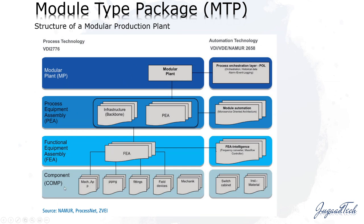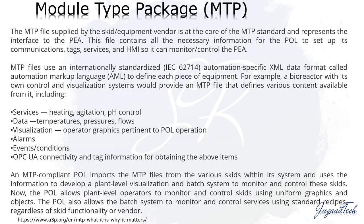The structure of a modular production plant: components are combined into a Functional Equipment Assembly, which is combined into a Process Equipment Assembly — called a PEA — with infrastructure, forming a modular plant that connects to the POL. The connection is made using the MTP file, which is based on Automation Markup Language, AML, a specific XML, to define each piece of equipment. It will have services like heating, agitation, and pH control loops; data like control modules sending process values; visualization including graphics, alarms, and events; and OPC UA connectivity.